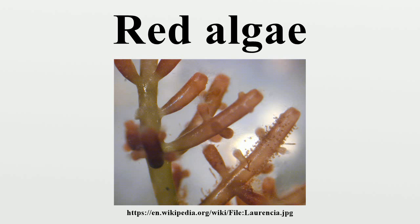The pit connection is formed where the daughter cells remain in contact. Shortly after the pit connection is formed, cytoplasmic continuity is blocked by the generation of a pit plug, which is deposited in the wall gap that connects the cells. Connections between cells having a common parent cell are called primary pit connections.